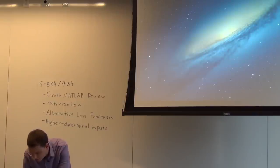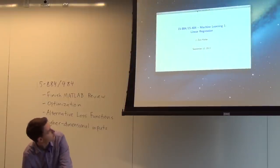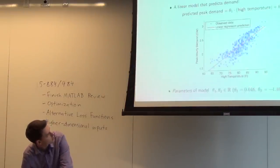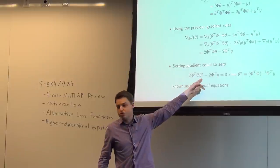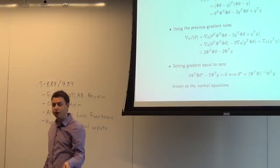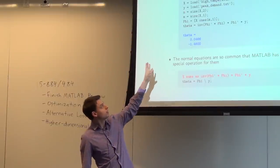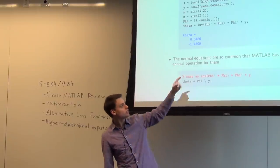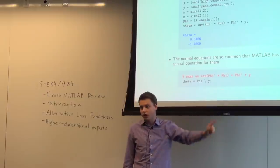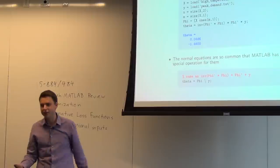Let's get back to our discussion of linear regression and talk about fancier things you can do in terms of different optimization problems. Last time we went through a nice derivation of the gradient and derived the analytic solution for the optimal parameters for least squares regression. That solution — theta equals (Φ^T Φ)^{-1} Φ^T y — is so common that there's a special command in MATLAB for it: the backslash operator. So linear regression with the squared loss function is literally one character in MATLAB code.